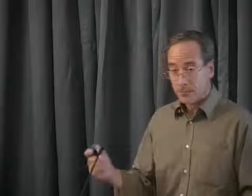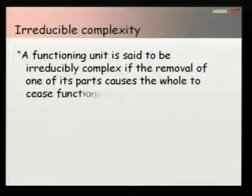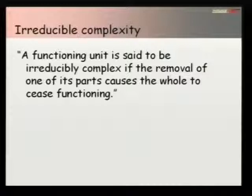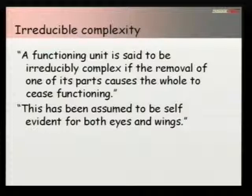We're now moving into the idea of irreducible complexity, and the question is: is the eye irreducibly complex? Richard Dawkins gives us a definition in his book: 'A functional unit is said to be irreducibly complex if the removal of one of its parts causes the whole to cease functioning.' That's quite a good definition. He then says this has been assumed to be self-evident for both eyes and wings, and goes on to do a fairly good job of demolishing that argument. But actually, as far as I know, no creationist has claimed that the eye or a wing is irreducibly complex — they claim it's complex and can't evolve. I think Dawkins is getting a little confused between irreducible complexity and complexity.